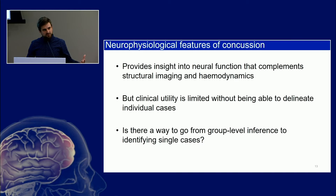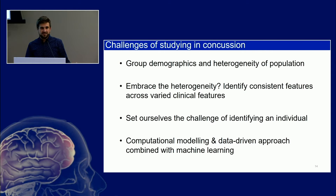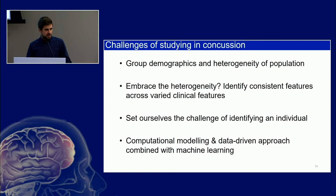Is there a way we can go from group-level inference down to picking out individual cases? There are many challenges in studying concussion — group demographics, heterogeneity of injury. But is there any way we can embrace that heterogeneity and identify consistent common features found across our varied groups? We set ourselves the challenge of identifying one individual. This was done by a postdoc in the lab, Dr. Jing Zhang.